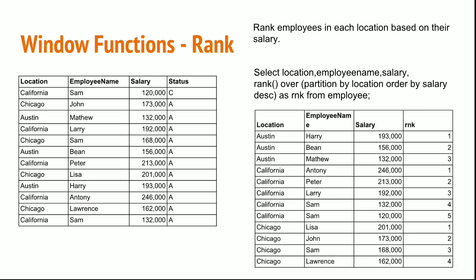This will group the location employees together and show that in Austin, the highest salary employee Harry holds rank 1. In a similar way it will compute the rank for all the locations.